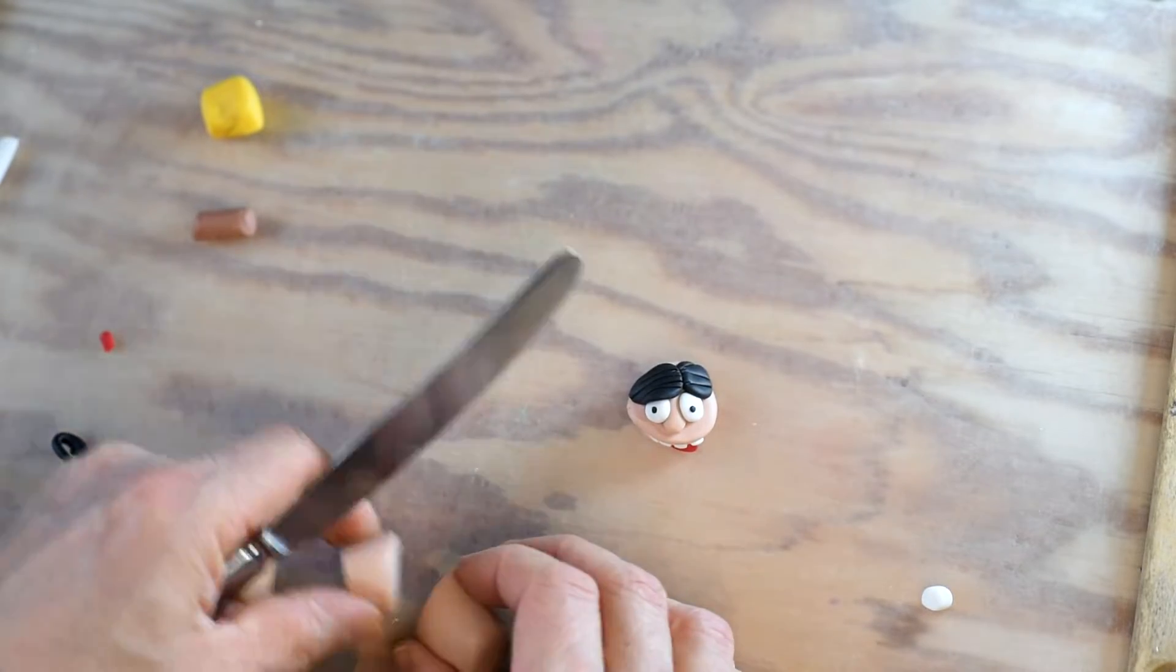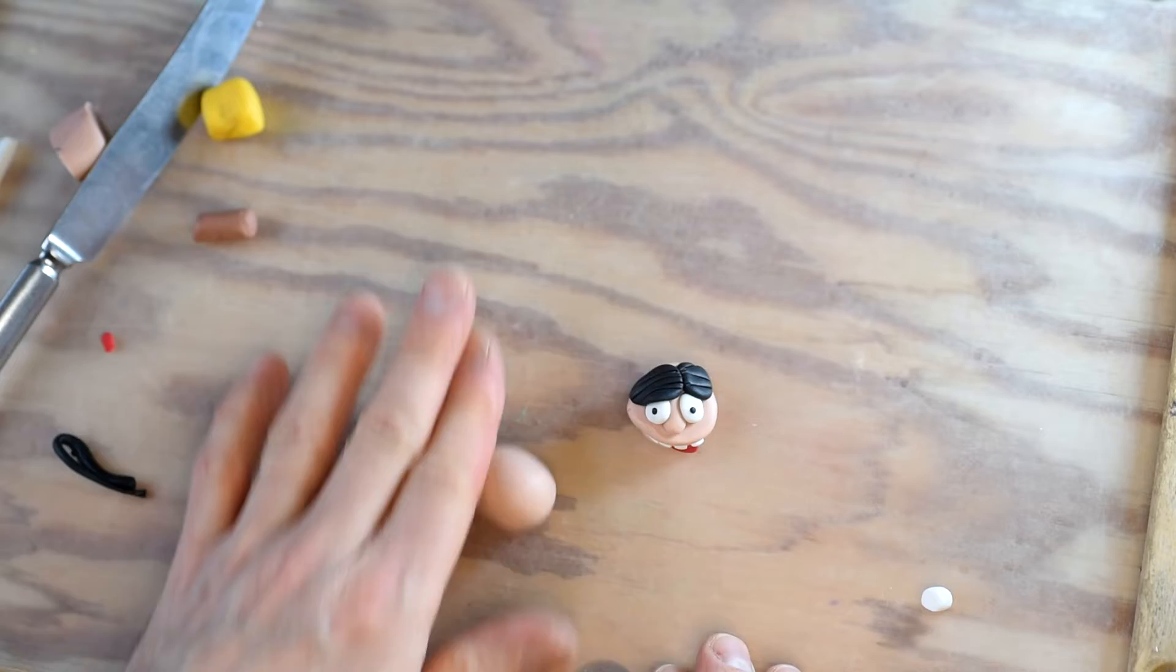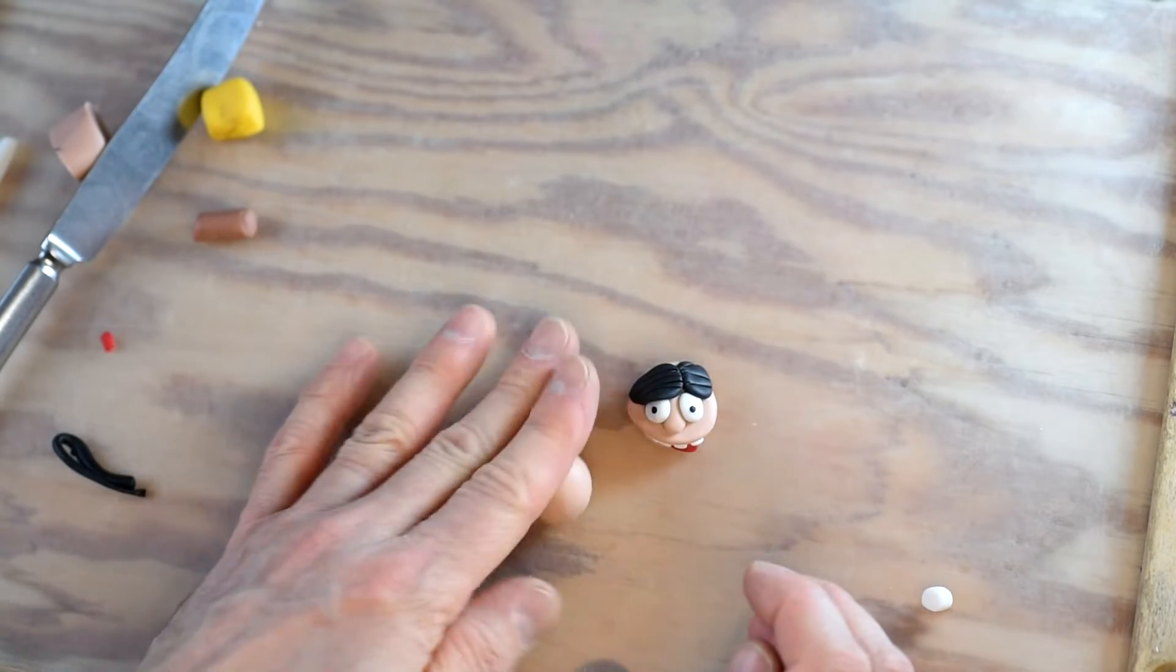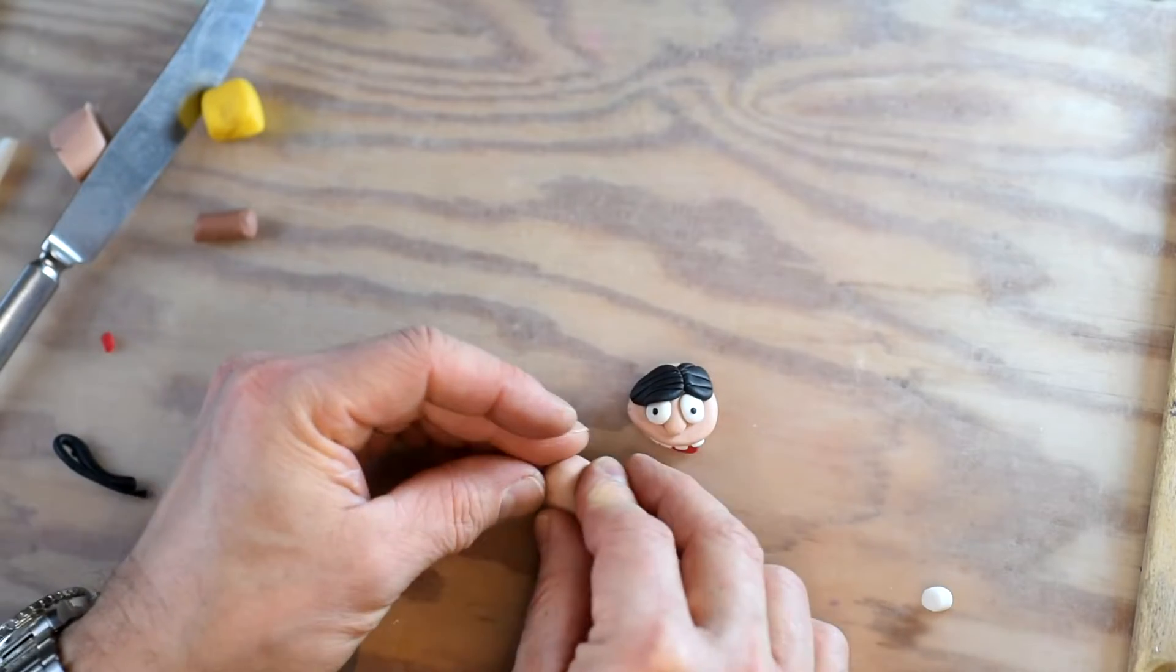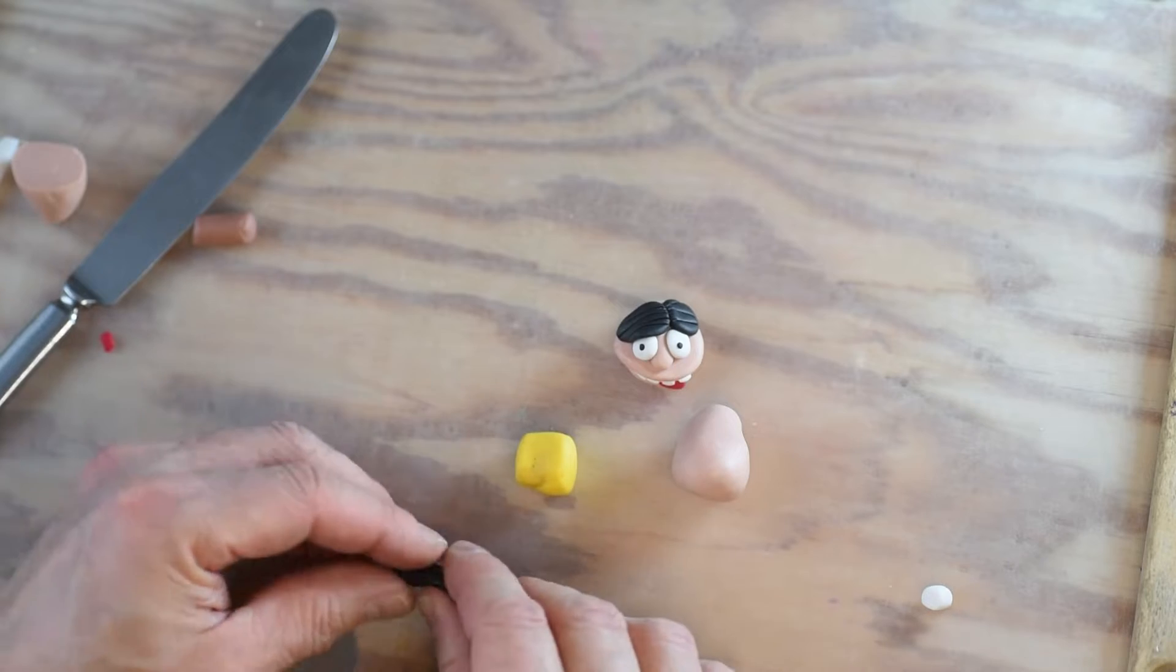Now let's make the body. Roll it and make a drop shape. This will be the body. But let's make the swimming trunks.